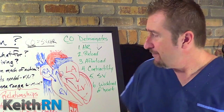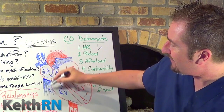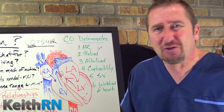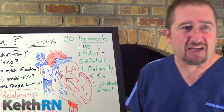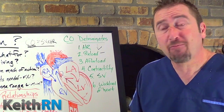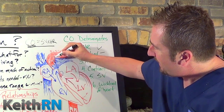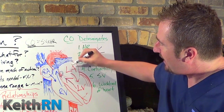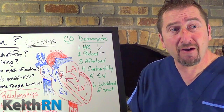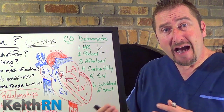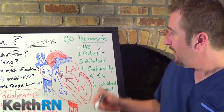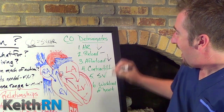When we look at preload — the filling pressures coming to the right side of the heart, the volume of the tank — beta blockers don't affect preload directly, so we give that a slash. Afterload, essentially the systolic blood pressure, is the pressure the left ventricle must overcome to open the aortic valve. The higher the systolic pressure, the higher the afterload and workload of the heart. Because a beta blocker has the opposite effect of sympathetic stimulation, it is going to decrease afterload.